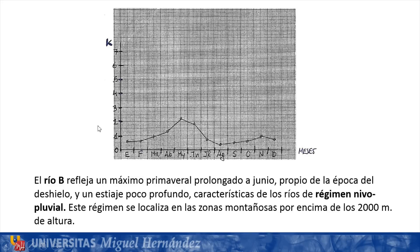River B reflects a prolonged spring maximum, extending as we see here until the month of June, typical of the snowmelt season, and a shallow low-water period. These characteristics are typical of rivers with a nivo-pluvial regime, with more important contributions in the form of snow and also rain. This regime is located in mountainous areas above 2,000 meters in altitude.